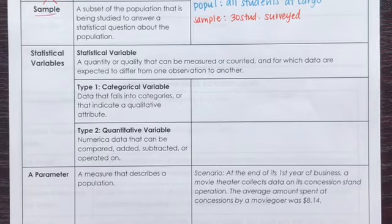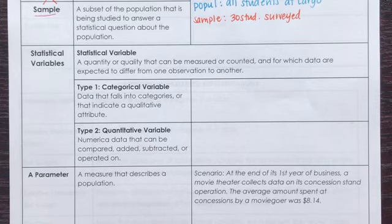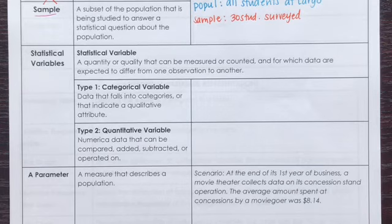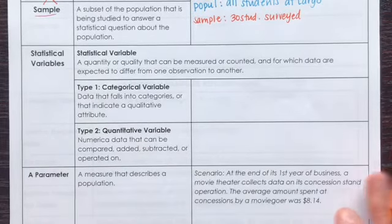Now, statistical variables. We know that a variable is something that is changing. A statistical variable is a quantity or a quality that can be measured or counted, and for which data is expected to differ from one observation to another. There are two main types of statistical variables.